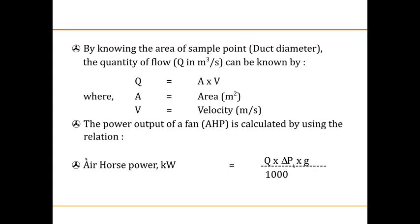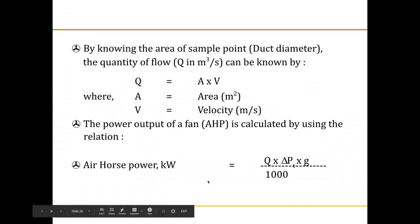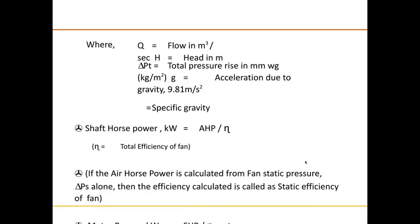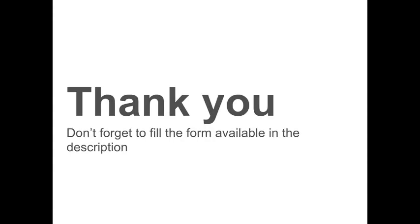Air horsepower is calculated as Q × ΔP × g / 1000. Once air horsepower is calculated, shaft horsepower equals AHP divided by efficiency, where efficiency is a standard value given on the nameplate of the fan.